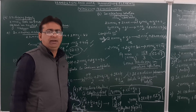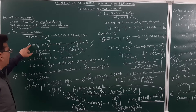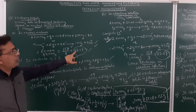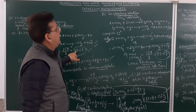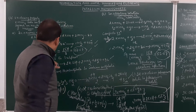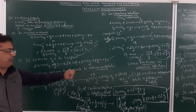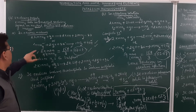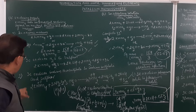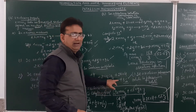The equivalent mass in neutral medium is 52.67, and in alkaline solution it is also 52.67. In neutral solution, it oxidizes hydrogen sulfide to sulfur. The ionic form equation is very important — you have to learn it. It also oxidizes sodium thiosulfate to sodium sulfate and sulfur.